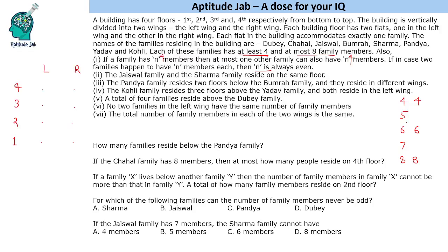Now we are given placement conditions. The Jayaswal family and Sharma family reside on the same floor. The Pandya family resides two floors below the Bumrah family and they reside in different wings. The Kohli family resides three floors above the Yada family and both reside in the left wing. A total of four families reside above the Dube family, which means Dube family is on the second floor.